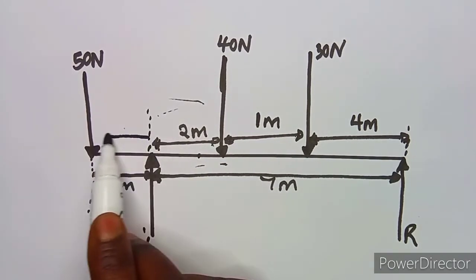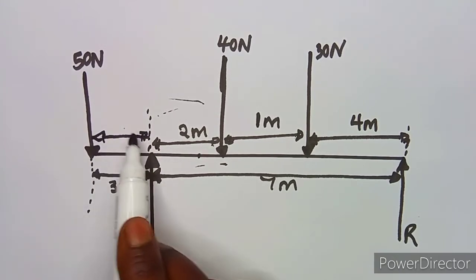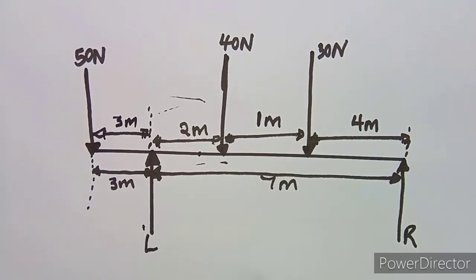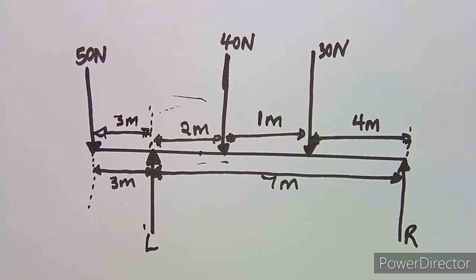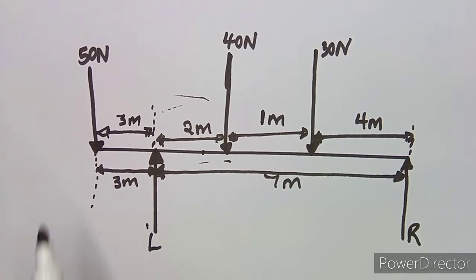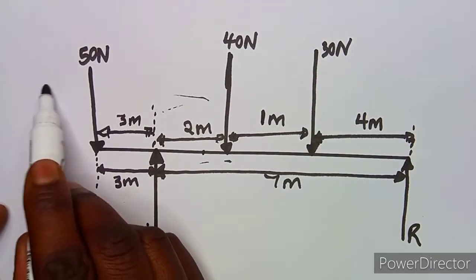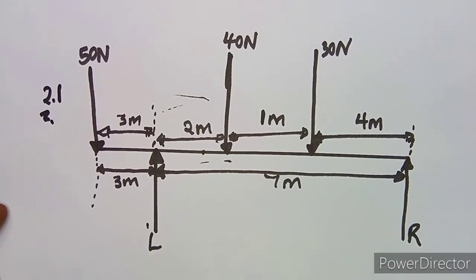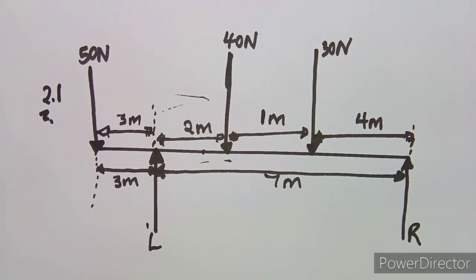We can indicate the three-meter distance with dotted lines. The three meters on the left side can be written below or on top — it's one and the same. That completes question 2.1, which required us to draw and label the beam.